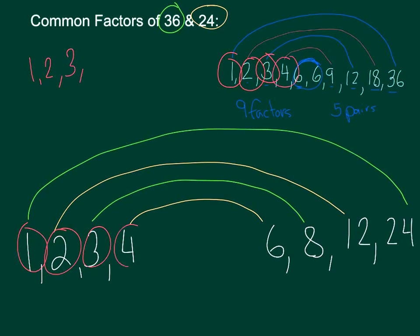4 is a common factor. It's on both lists. 6 is a common factor. It's on both lists. 8 is not because there is no 8 up here. 12 is a common factor.